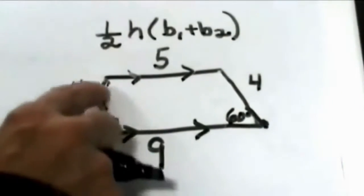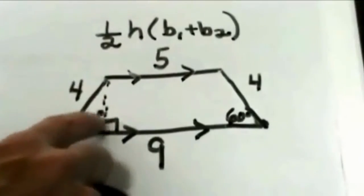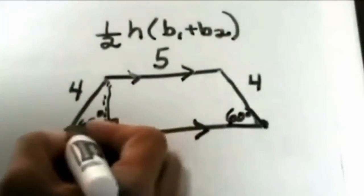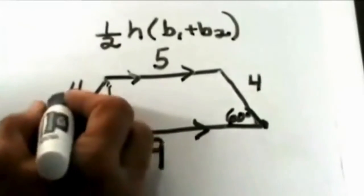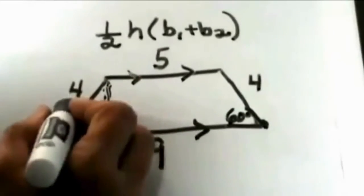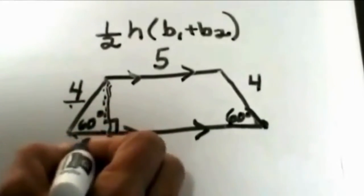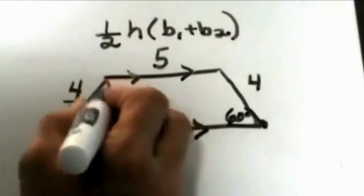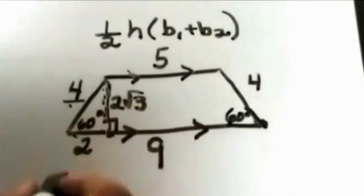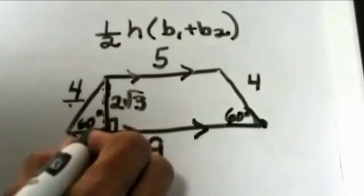So when you drop this altitude down you have a 30, 60, 90 right triangle. When I drop the altitude down, I can find this distance by taking half of the hypotenuse because in the 30, 60, 90, that's the rule. Take half of the hypotenuse to find the short leg, and that's 2, and multiply it times the square root of 3 to find the long leg, which is also the height of our trapezoid.